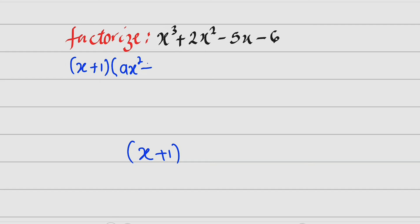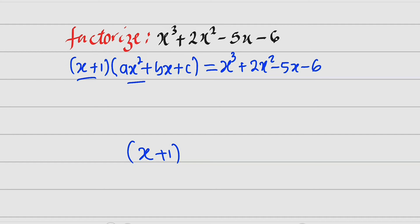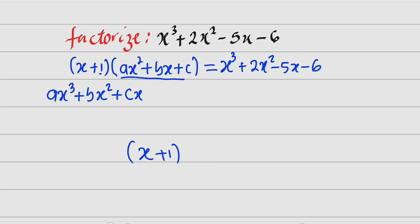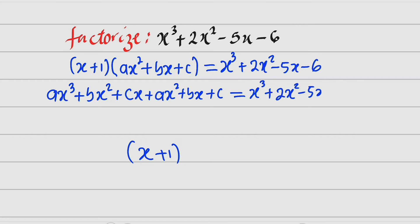The general form of the quadratic is ax squared plus bx plus c. If we multiply this with this, we have to get the required polynomial: x to the third power plus 2x squared minus 5x minus 6. So now let us distribute. We have x multiplied by ax squared, which is ax to the third power; x multiplied by bx is bx squared; then x multiplied by c is cx. Then we take the constant positive 1 and distribute over this polynomial — it will just repeat: ax squared plus bx plus c. And to the right-hand side we have x to the third power plus 2x squared minus 5x minus 6.